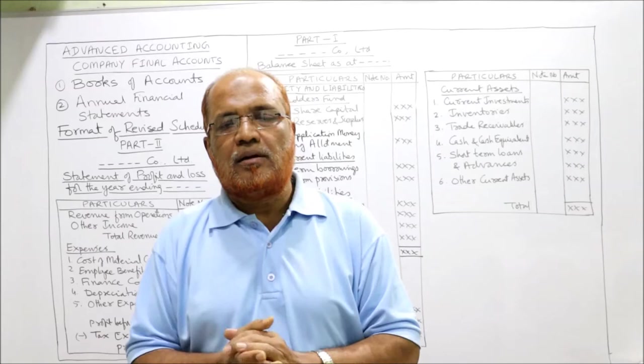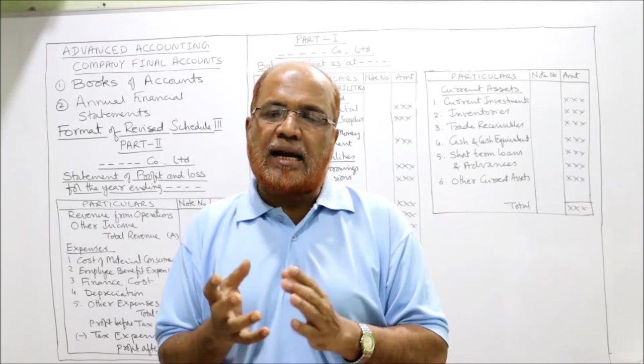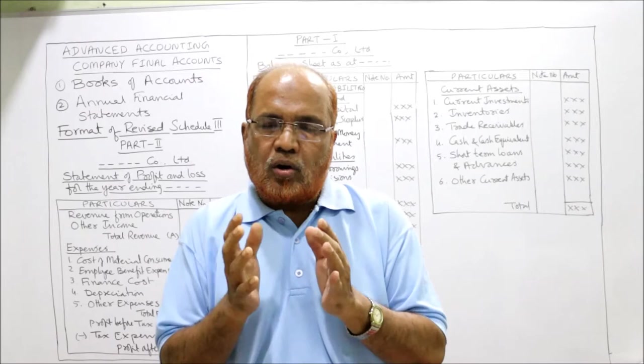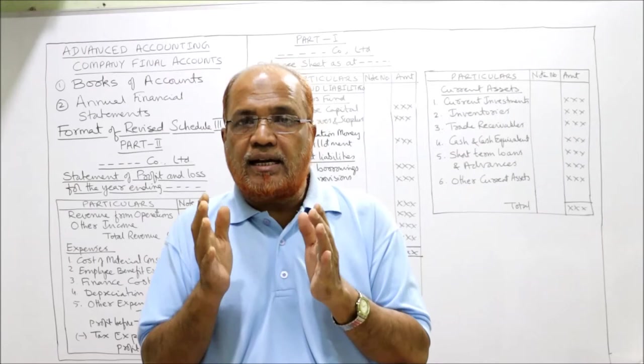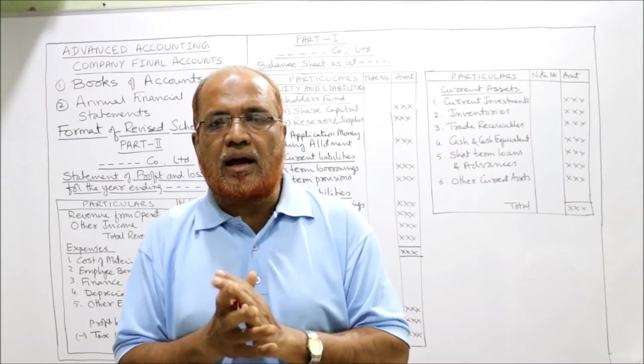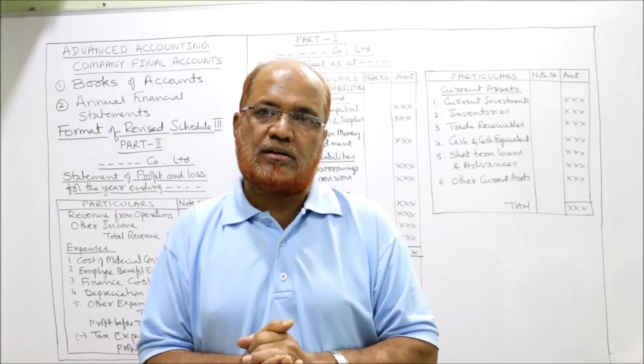Similarly, a bills receivable book is maintained to record the details of bills receivable, and a bills payable book to record the details of bills payable. A journal proper is maintained to record opening entries, closing entries, adjusting entries, and rectification entries. A general ledger is maintained to record all accounts not relating to customers and suppliers. A debtors ledger is maintained to record the accounts of all customers, and a creditors ledger to record all accounts of suppliers.